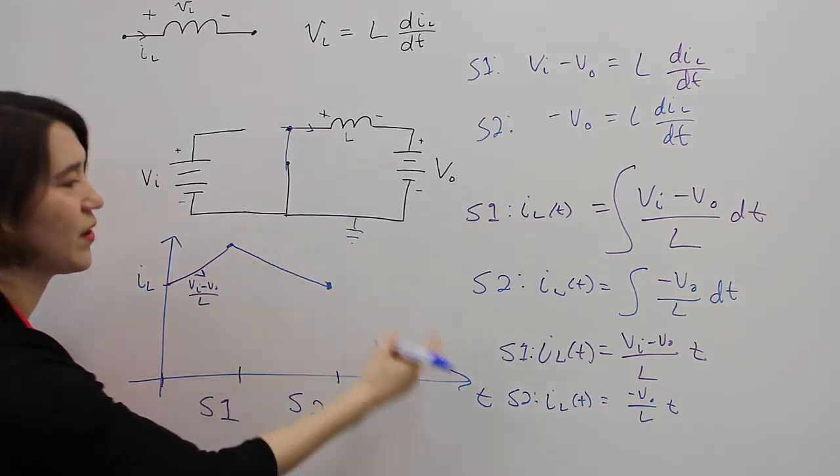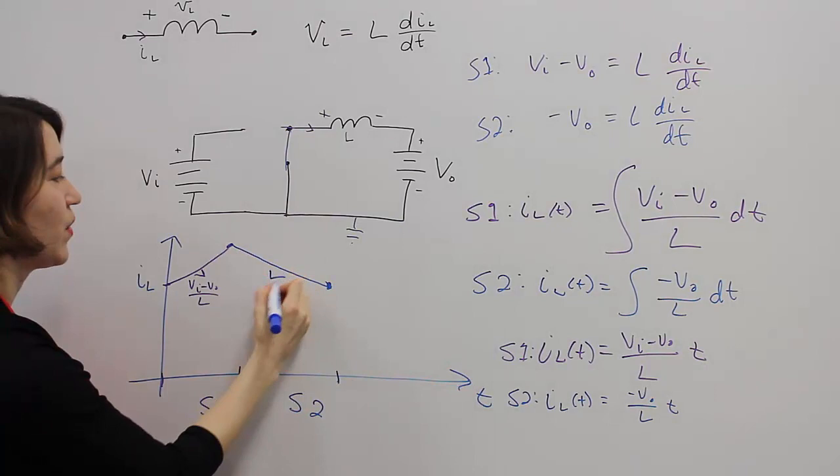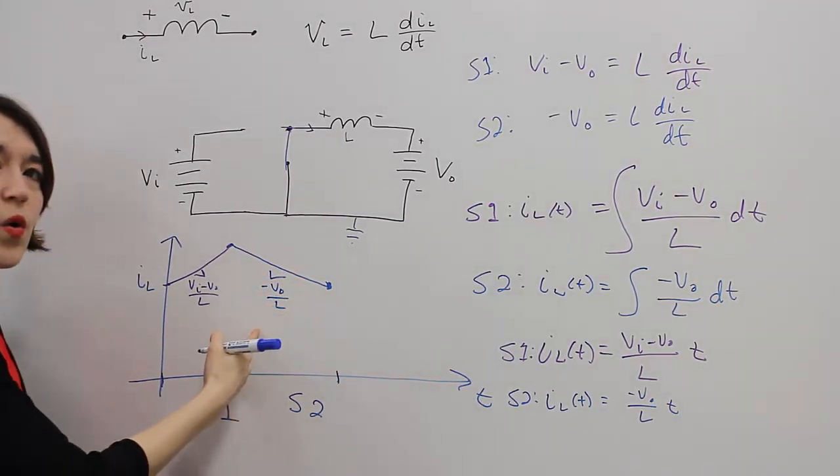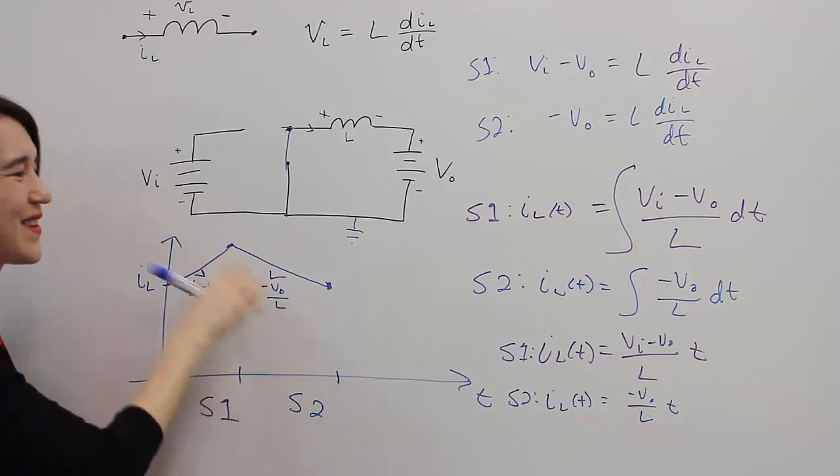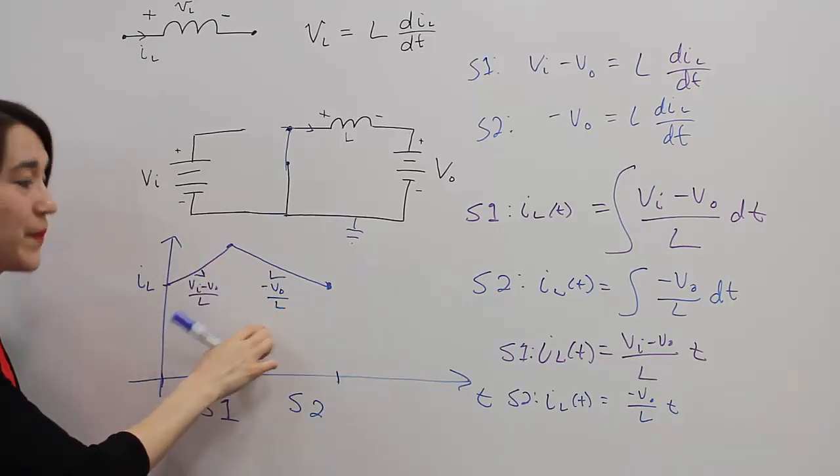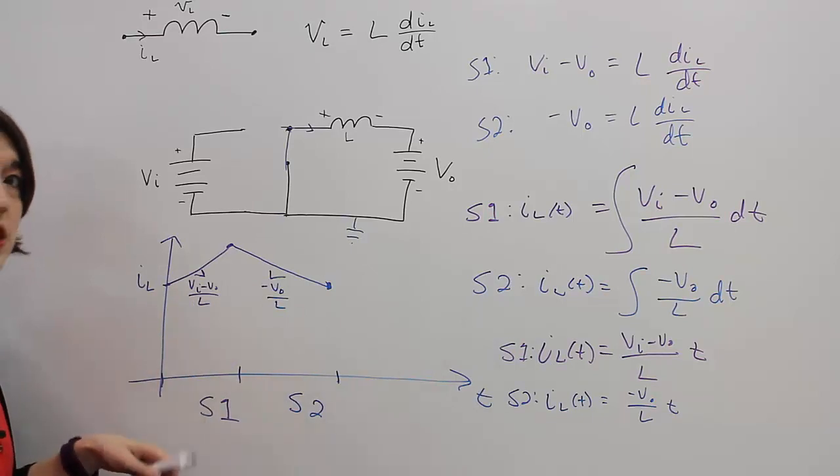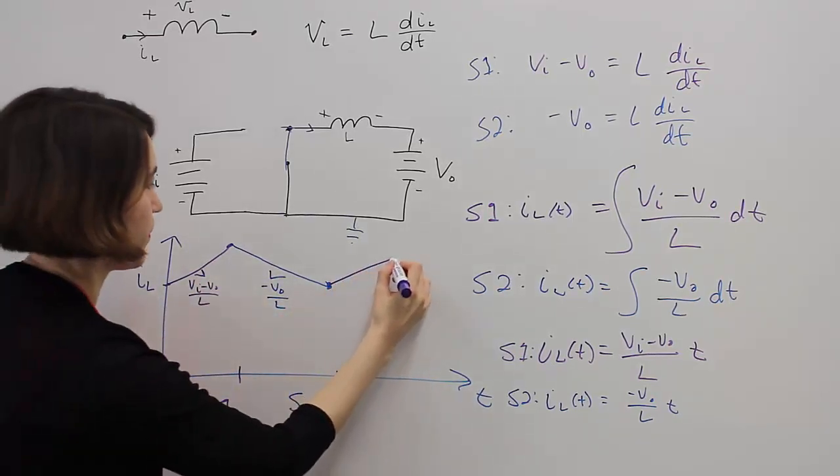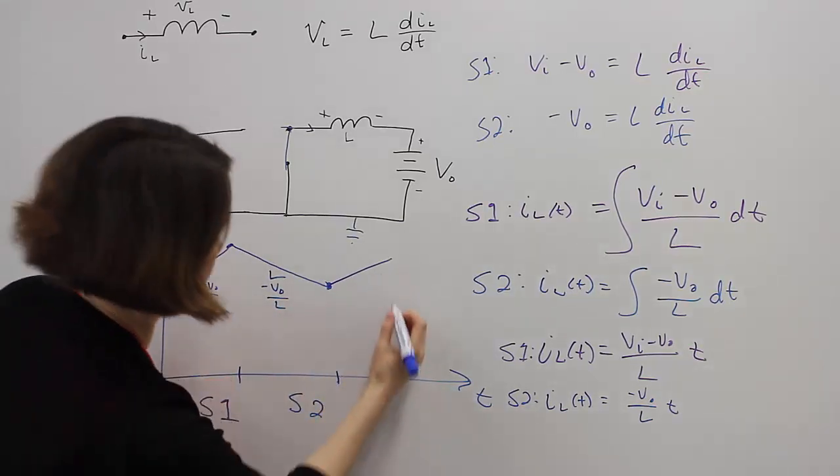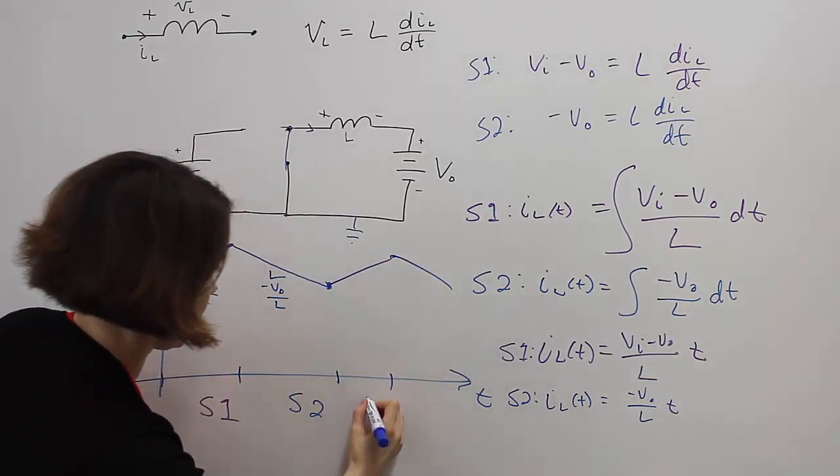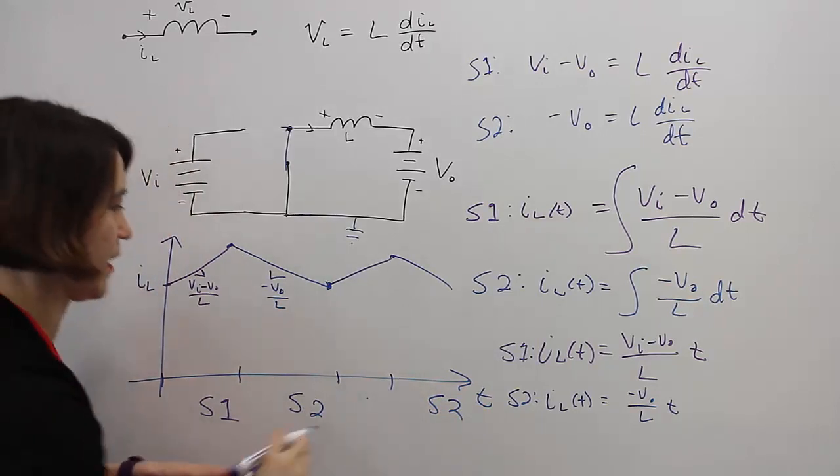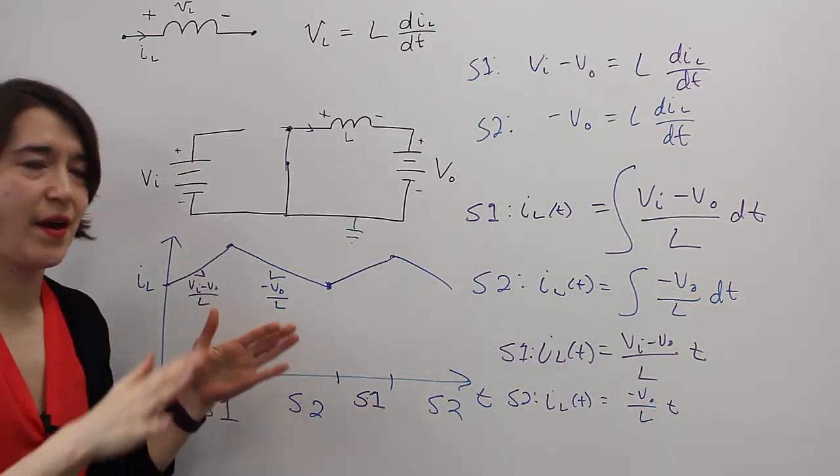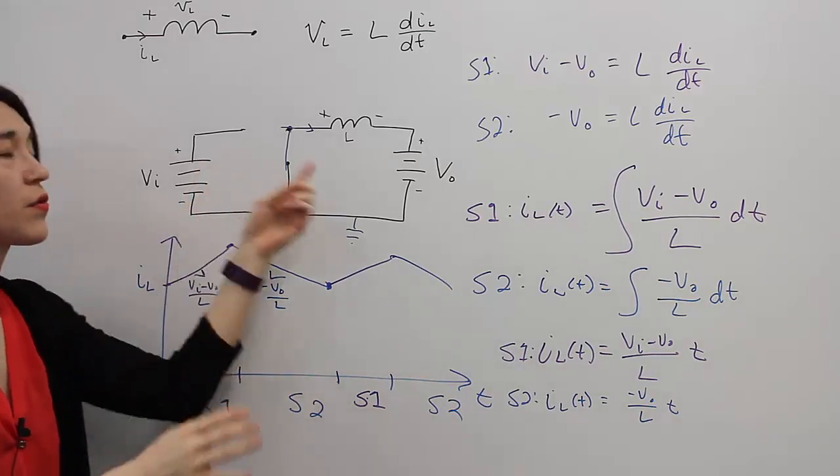And you'd have to actually calculate it out, but you'll get some negative value according to—sorry, the slope of this line will be this negative value. And if you continue to switch between these two, you will continue in the same fashion. So from here to here and then back down. So this would be stage two and stage one again. This is the basic current waveform that you'll get through the inductor.